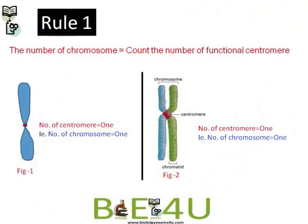Rule 1 for counting chromosome number: the number of chromosomes is equal to the number of functional centromeres. In figure 1, a chromosome drawn with a single chromatid — the number of chromosomes is 1. In figure 2, two chromatids are held at one centromere, so the number of functional centromeres is 1, and therefore the number of chromosomes is also 1.